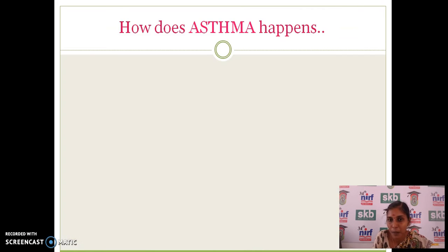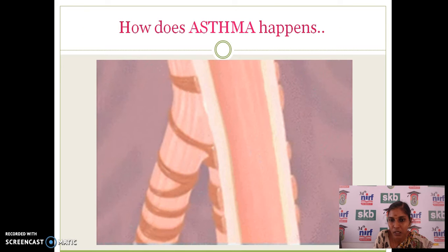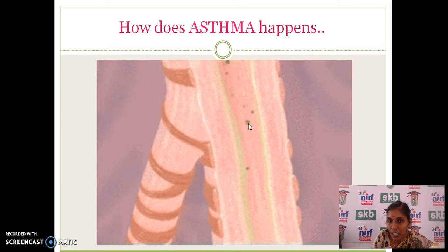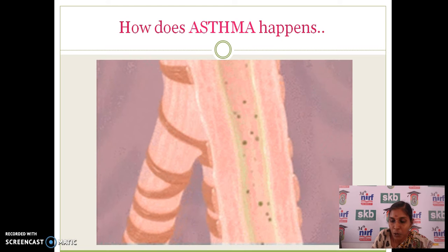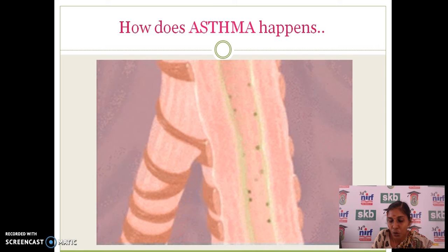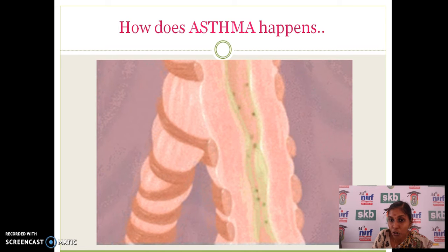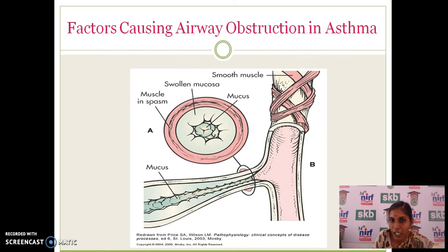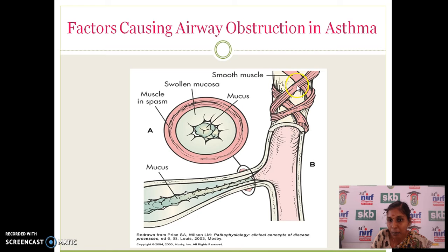Whenever an allergen enters the body, it initiates an inflammatory response — vascular changes happen in the body. Due to the body's opposition to the foreign material, mucus gets released, causing asthmatic conditions. Factors such as pollens or dust particles cause mucus secretion, and the effect on alpha-antitrypsin leads to constriction of bronchial muscles, all contributing to asthmatic conditions.